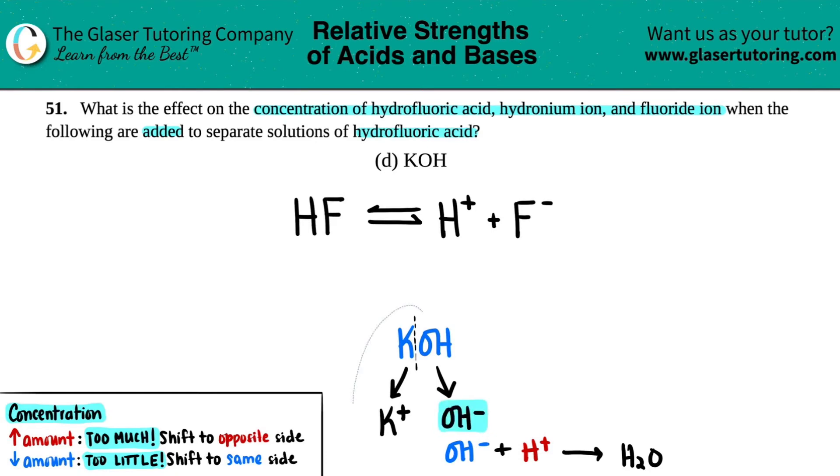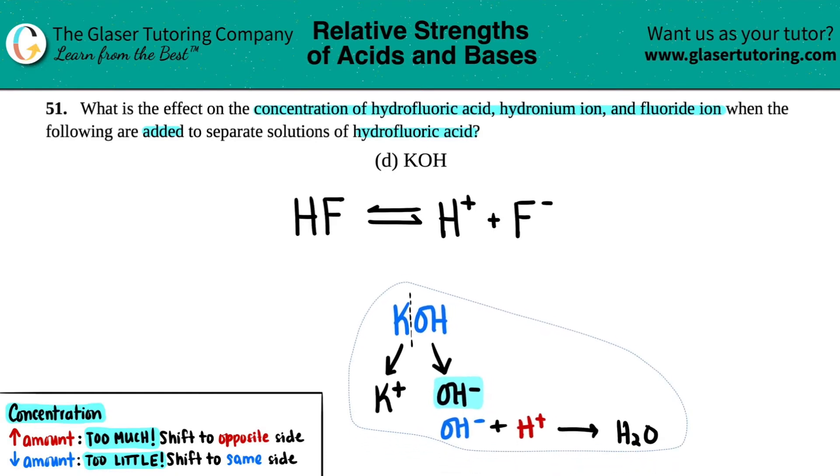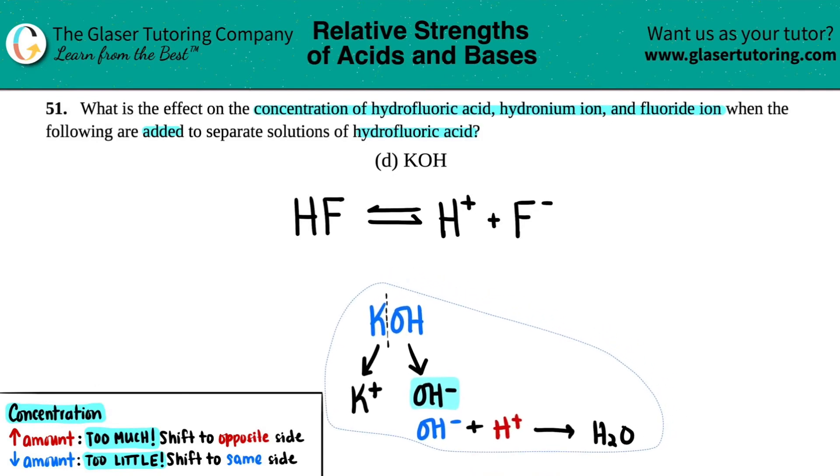So if we're adding KOH, that means that this is increasing and it trickles down, which means that if I have more KOHs, I have more OH minuses.